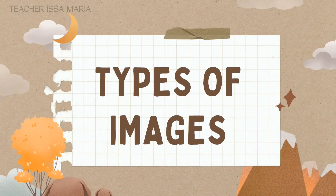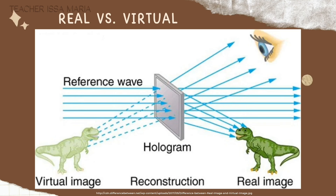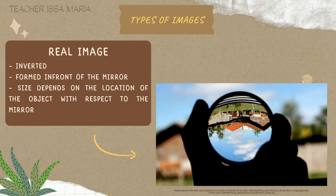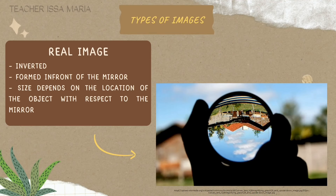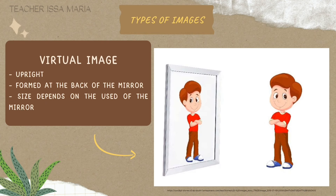We have the types of images. We have real and virtual. Real is always inverted while virtual is always upright — please take note of that. A real image is inverted and is formed in front of the mirror; its size depends on the location of the object with respect to the mirror. A virtual image is always upright, formed at the back of the mirror, and its size depends on the use of the mirror.